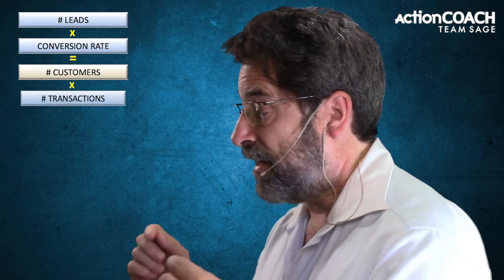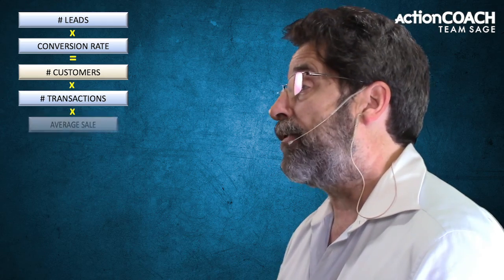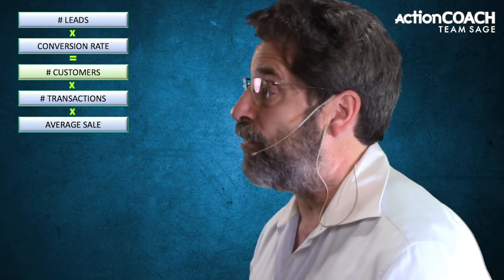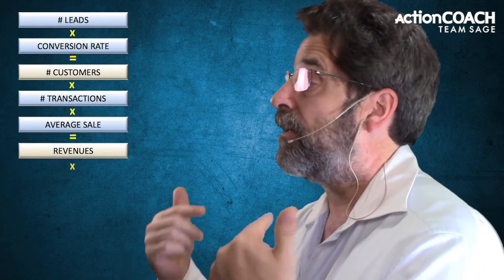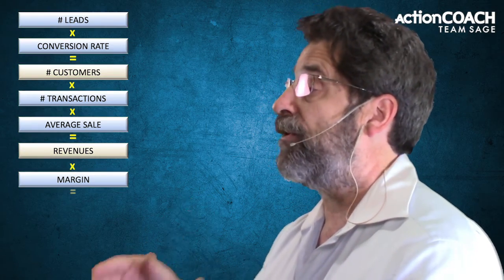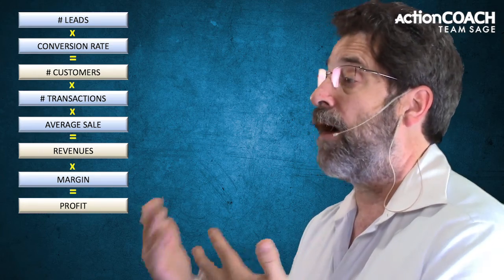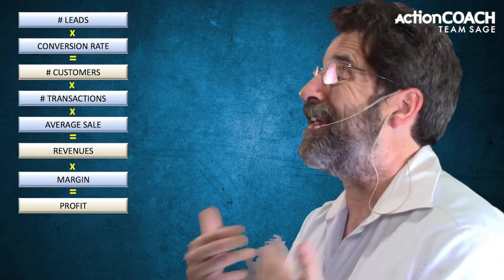Your number of customers times your number of transactions — that's how many times they actually purchase from you on average — times your average dollar sale, which is how much they spend with you on average, gives you your revenues. Those are the next two: number of transactions and average dollar sale. Then your revenues times your margins — that's the fifth one — give you your profits. Margin is what percentage of what you bring in do you get to keep as profit. Those five areas are the five ways you can increase your profits.